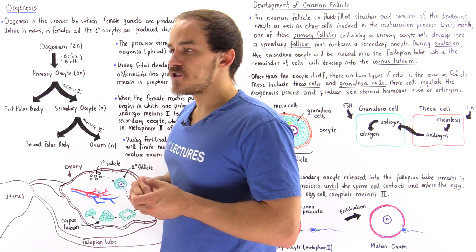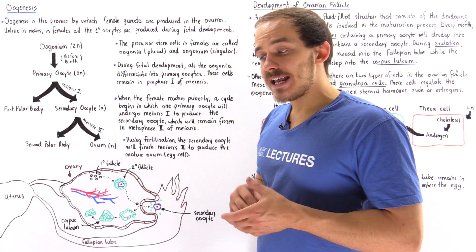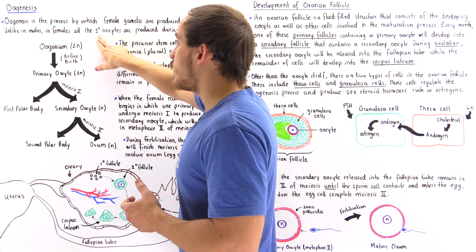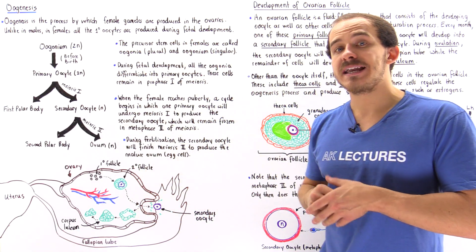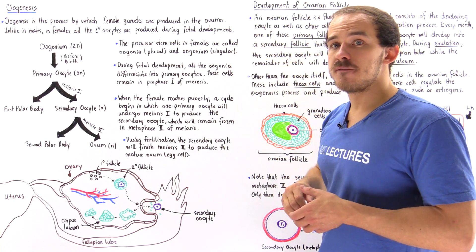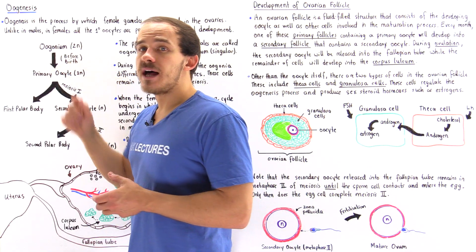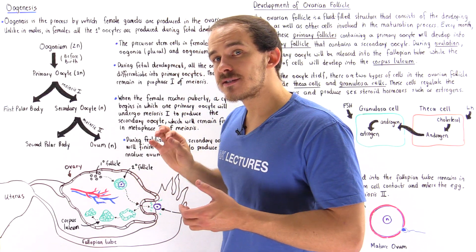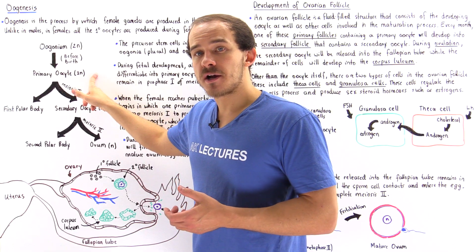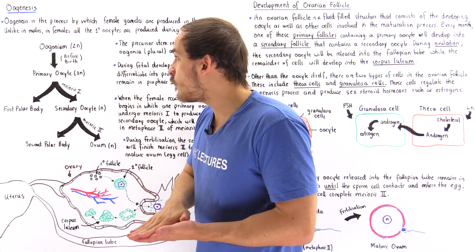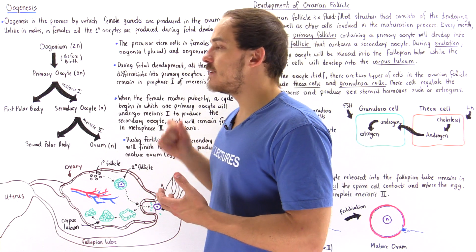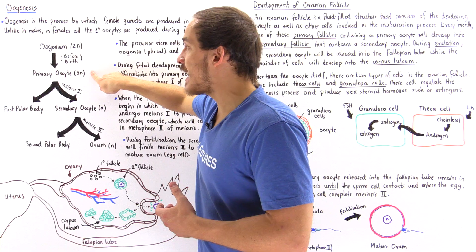The major difference between male and female individuals is that in female individuals all the primary oocytes are formed before that individual is actually born — they are formed during fetal development. All these stem cells, the oogonia, inside the developing fetus basically differentiate into the primary oocyte, and this happens before the birth of that female individual.